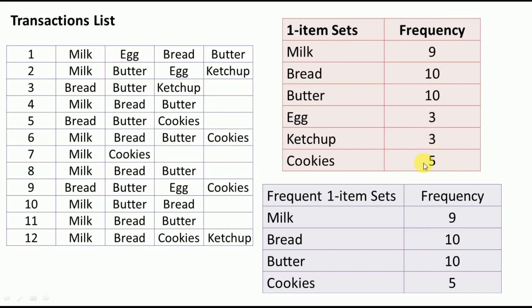Next, we create a table of frequent one-itemsets — those satisfying the minimum support of 33 percent. Out of 12 transactions, 4 divided by 12 equals 33 percent, so a product must appear at least 4 times to qualify.